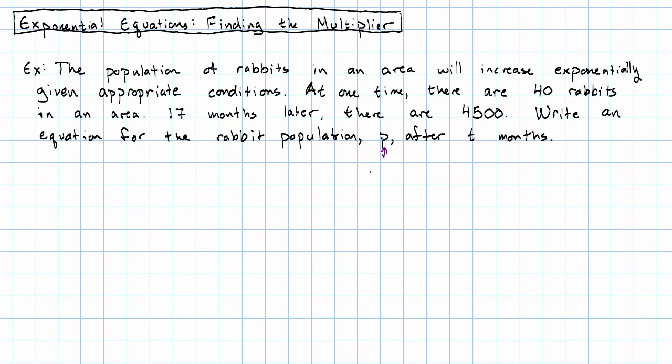Now, the population is going to be our dependent variable. It acts like Y. And the time T is going to be our independent variable, so it acts like X. The starting value of P, the starting population is 40. And we know that after 17 months, the population is 4,500.